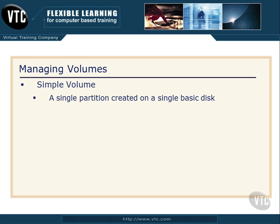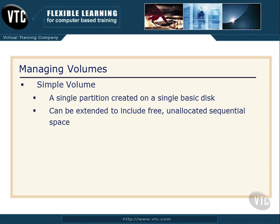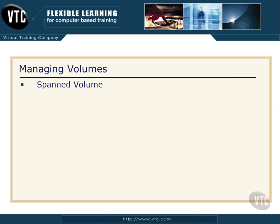With a simple volume, all the files or all the space has to be from a single partition on a single basic disk. We talked about basic and dynamic disks in a separate video, so go check out the Basic and Dynamic Disk video if you haven't seen it. A simple volume can be extended to include free space, but it has to be unallocated sequential space — meaning the space has to be sitting right next to our volume, and we can just kind of ooze over into it.